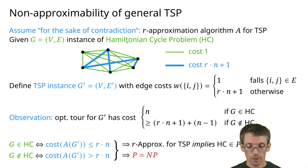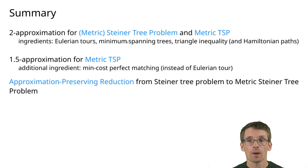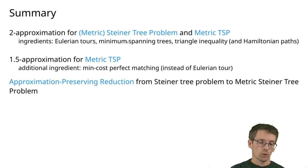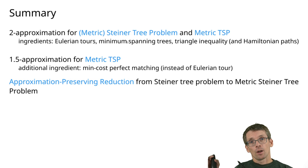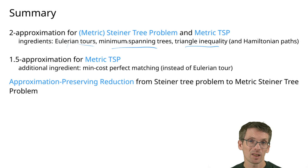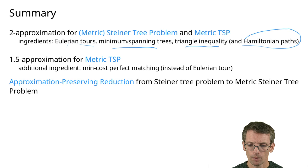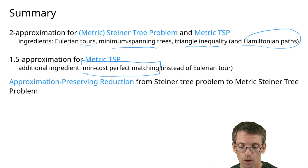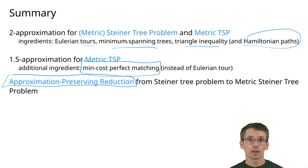To wrap up: we saw a 2-approximation for the metric Steiner Tree problem, combined with an approximation-preserving reduction from the Steiner Tree problem to the metric Steiner Tree problem, giving a 2-approximation for the Steiner Tree problem. We saw a 2-approximation for metric TSP using minimum spanning tree, Eulerian tour, and shortcutting. For the 1.5 approximation (Christofides), we additionally used min-cost perfect matching on odd-degree vertices. For the Steiner Tree problem the reduction is key, while for TSP, the metric and non-metric versions are fundamentally different — one admits approximation, the other does not.